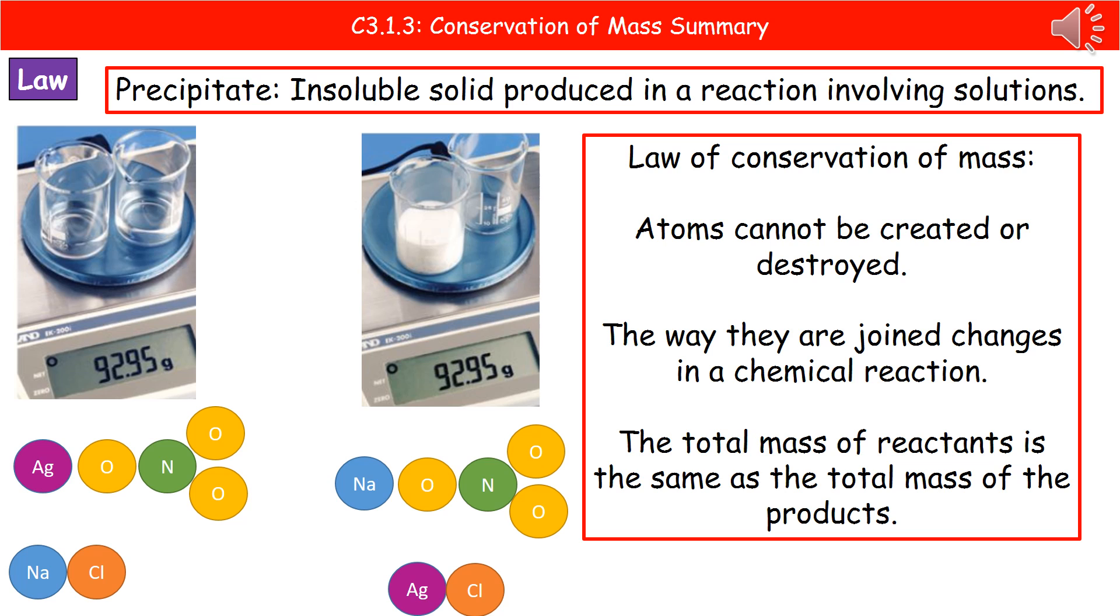Now, if we have a look on the right hand side, all we've done there is change how they're actually joined. So the silver and the sodium have changed places. But if you count them all up, we still have one silver, three oxygen, one nitrogen, one sodium and one chlorine.